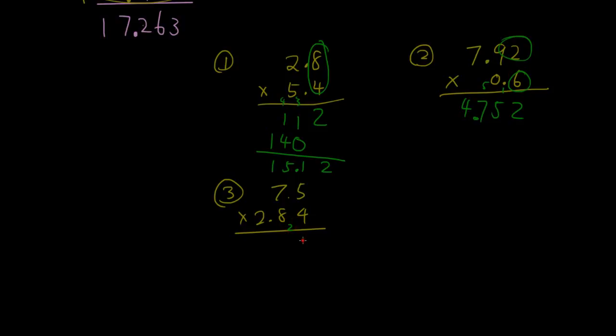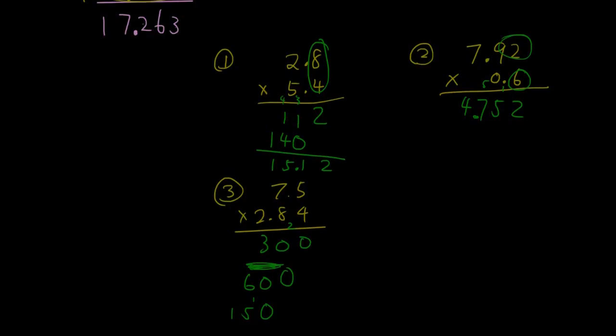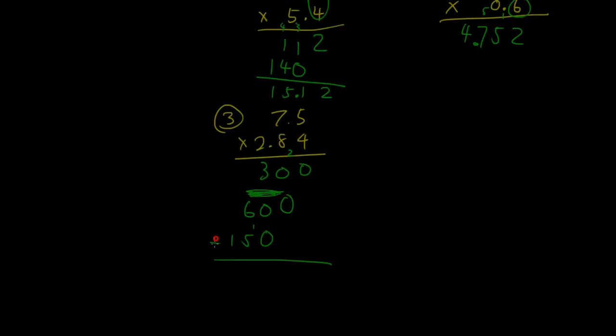Next one. 5 times 4 is 20. 4 times 7 is 28, plus 2 is 30. 8 times 5 is 40. 8 times 7 is 56, plus 4 is 60. 2 times 5 is 10. 2 times 7 is 14, plus 1 is 15. Add all these together. So I got 0, 0, 3. Ignore this. 11, and 2.